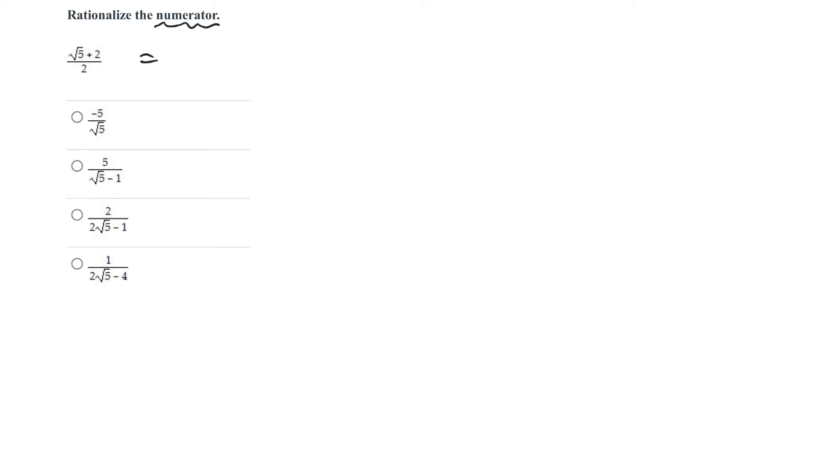So to rationalize the numerator, I would take the expression that I have and multiply top and bottom by the conjugate. So it'd be root 5 minus 2, and I have to multiply both of them by that.